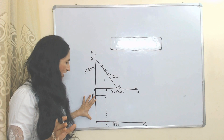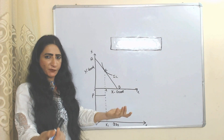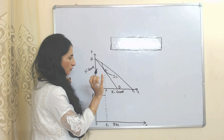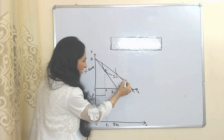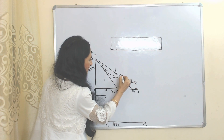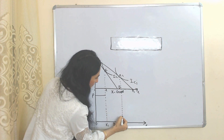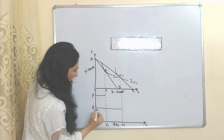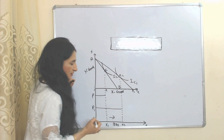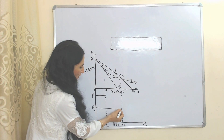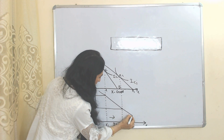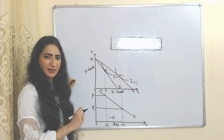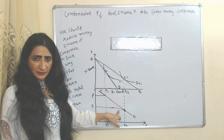Now suppose the price of X falls. As the price of X falls, the budget line shifts forward, and AB1 becomes the new budget line. The new indifference curve is IC1, and the new equilibrium point is E1. As price falls from P to P1, quantities of X increase from X1 to X2. When we join these two points, we get our normal demand curve, also called the Marshallian demand curve.